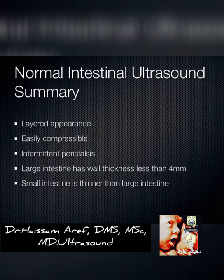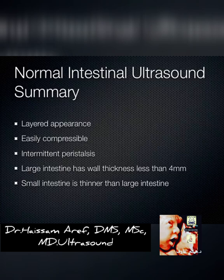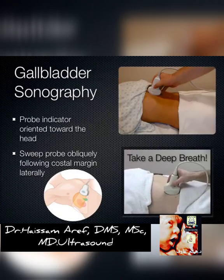To summarize what we've covered: normal intestinal ultrasound shows a nice layered appearance, is easily compressible, and you should see intermittent peristalsis. Large intestine should have wall thickness less than 4 millimeters, and small intestine is less than that.